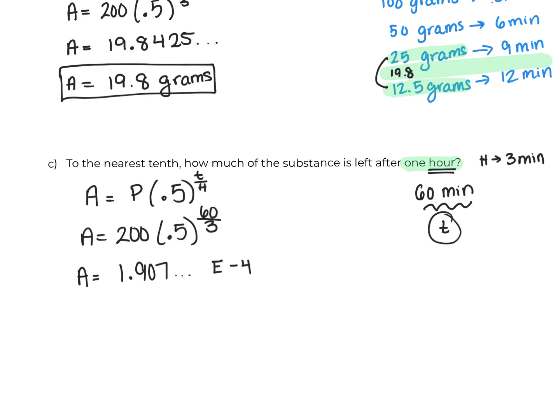This E to the negative 4 means times 10 to the negative 4. If you remember how scientific notation works, if you have a negative exponent, you're going to move the decimal